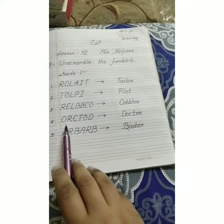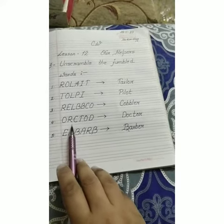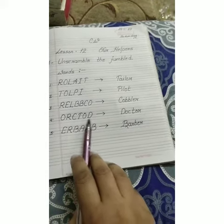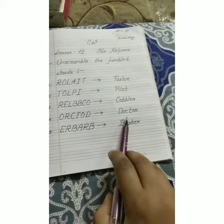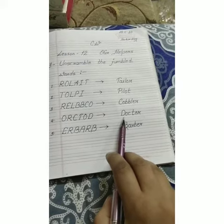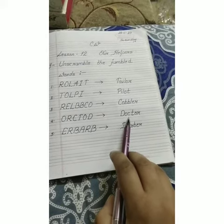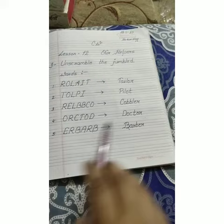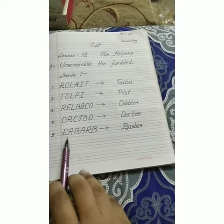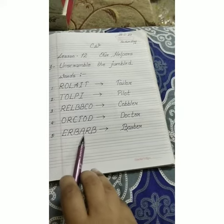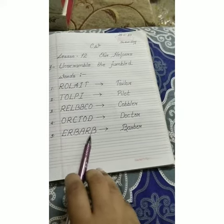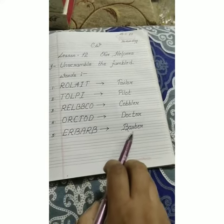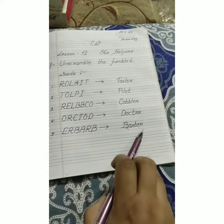Number four: O-R-C-T-O-D — this is jumbled. You have to write the correct word: doctor. D-O-C-T-O-R — doctor. Number five: E-R-B-A-R-B. The correct word is barber: B-A-R-B-E-R — barber.